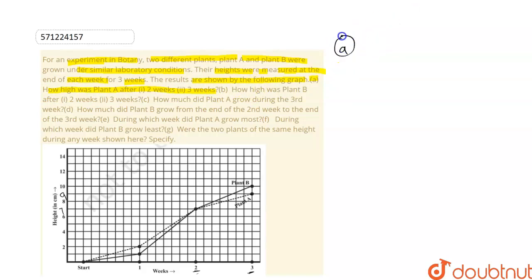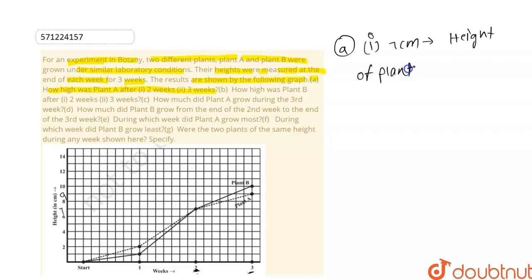For Part A, the first question is: how high was Plant A after two weeks? Plant A is represented by the dotted line. At two weeks, the height of the plant is seven centimeters. So the height of Plant A after two weeks is 7 cm. The second part asks: how high was Plant A after three weeks?